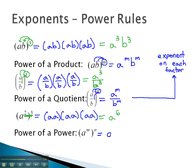The power of a power rule says we multiply the exponents together through the parentheses. a to the m times n, multiplying the exponents.